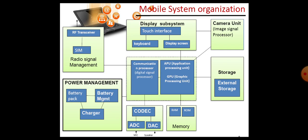My dear children, you should know how the devices and processors are interconnected. The communication processor is interconnected with radio signal management and codec. The APU and GPU are interconnected with display, camera, storage, and primary memory. The entire system is connected with power management, which is nothing but how your mobile device gets power backup for doing processing.